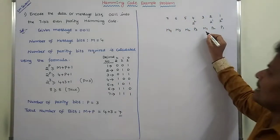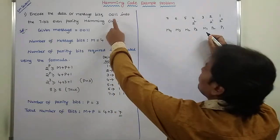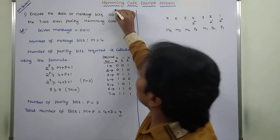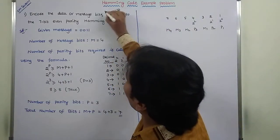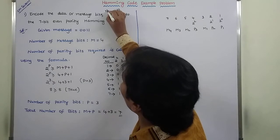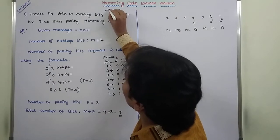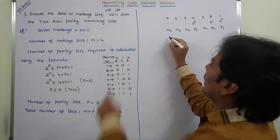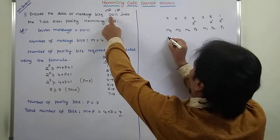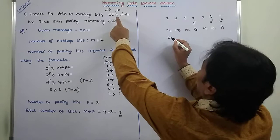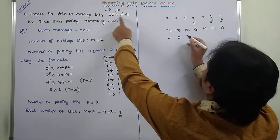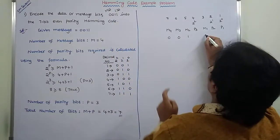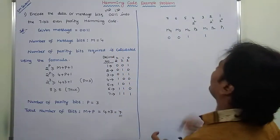The message bit values are 0, 0, 1, 1 — this is LSB and this is MSB. So the MSB bit value is 0, next is 0, next is 1, next is 1.